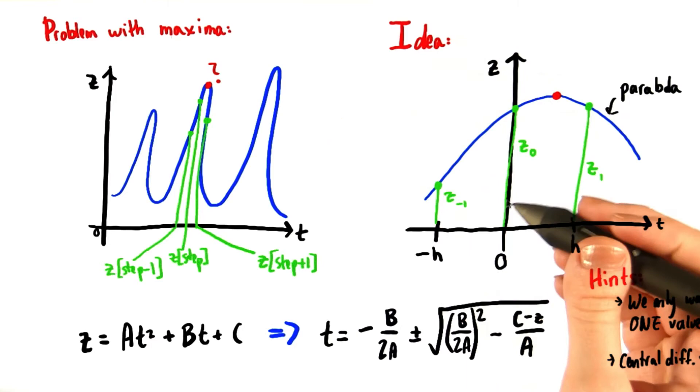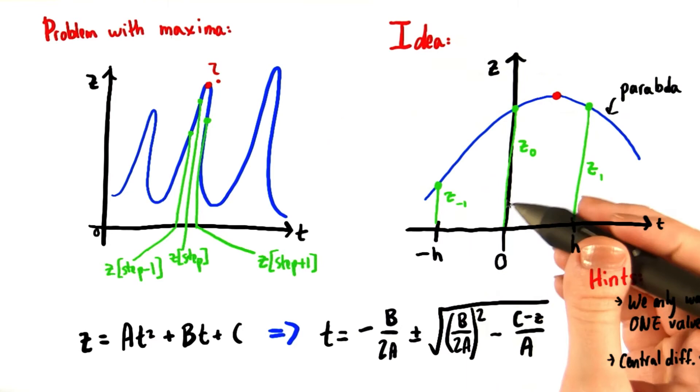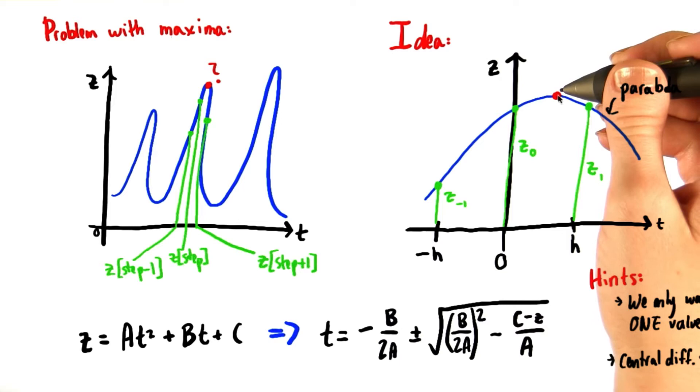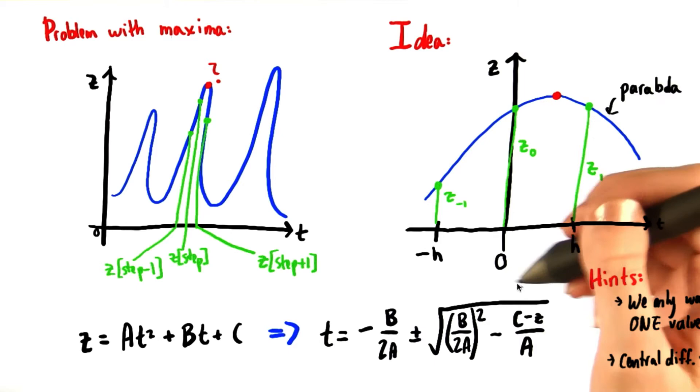In order to approximate better where this actual peak is, we can pretend that there's a parabola connecting these three different points. The vertex of the parabola will be our estimate for where the true location of the peak is. To find out the t coordinate of the peak, you can just simply use the quadratic formula.